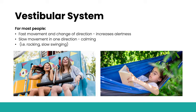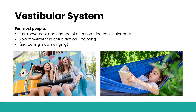The vestibular system gets information from the inner ear. Within the inner ear are semi-circular canals — fluid-filled hoops held at different angles. As we move our head, the fluid within these hoops moves, sending sensory messages to the brain about movement, change of direction, and change of head position. For most people, fast movement and lots of change of direction increases alertness, whereas slow movement in one direction — such as rocking or slow swinging — is more calming. A spinning fairground ride leaves you pumped up, whereas a rocking chair leaves you calm and relaxed.